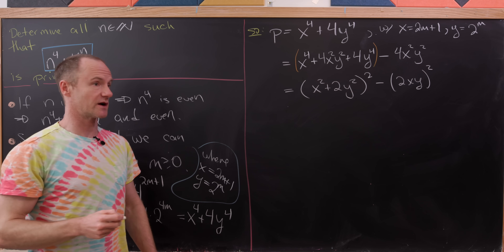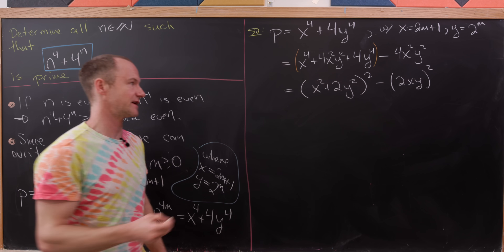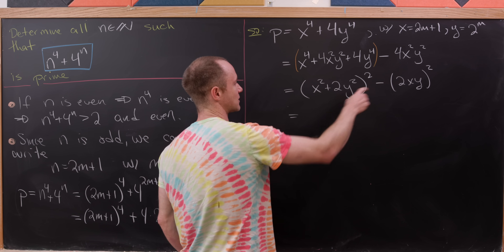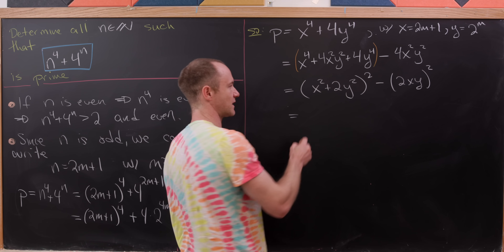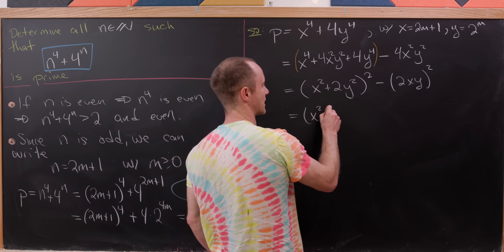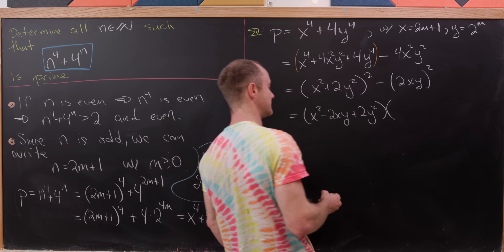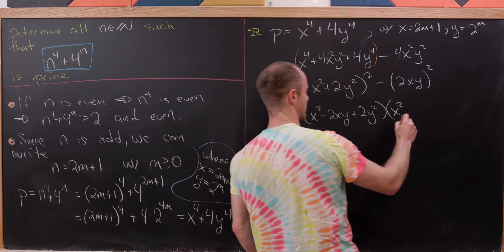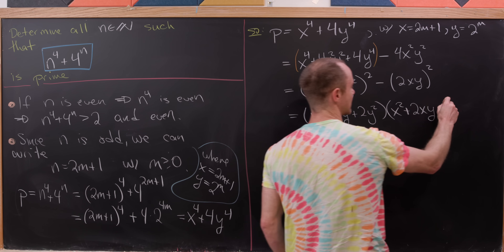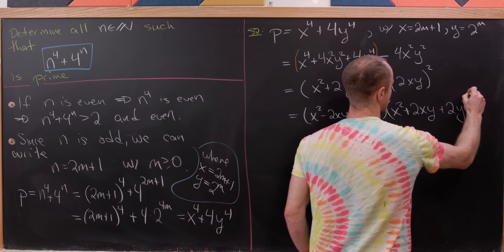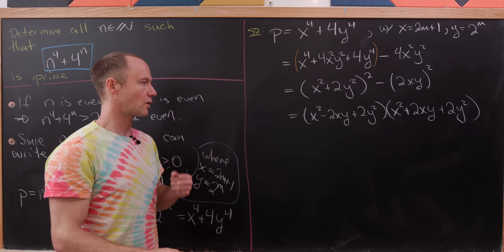That's a difference of squares, which we can always factor. Factoring it gives us (x squared minus 2xy plus 2y squared) times (x squared plus 2xy plus 2y squared). So there's our factorization of x to the fourth plus 4y to the fourth.